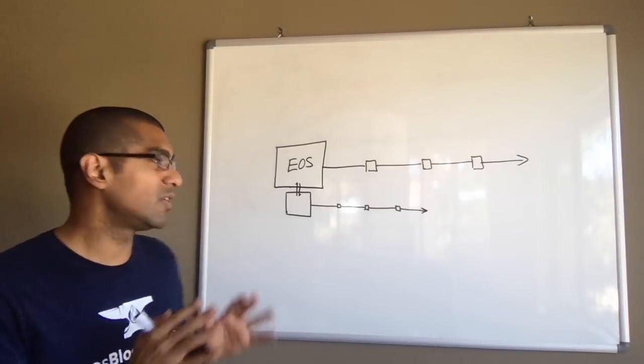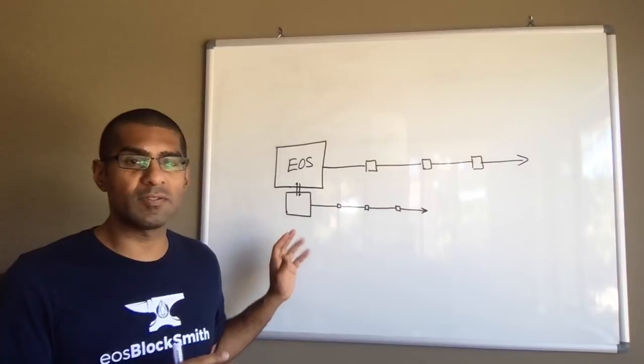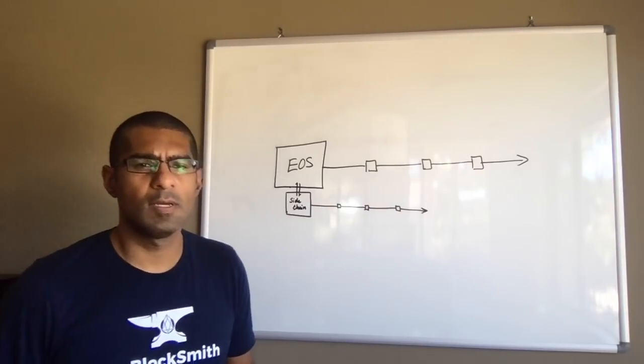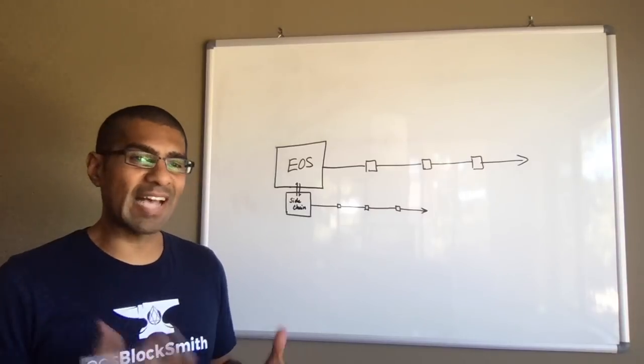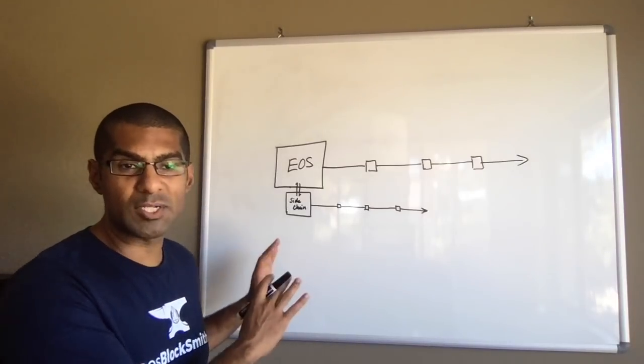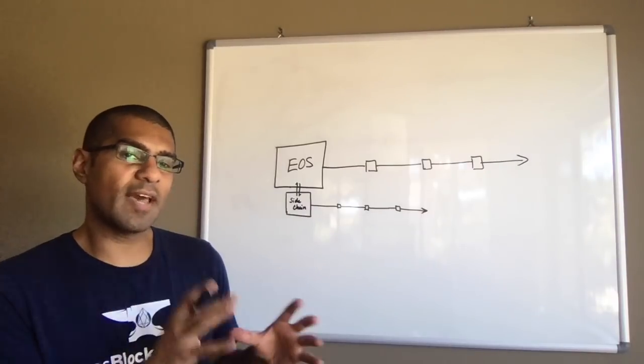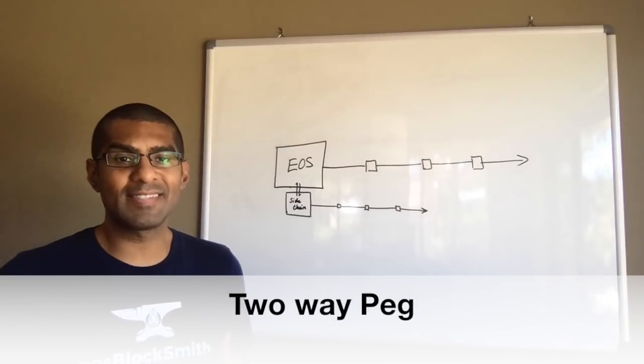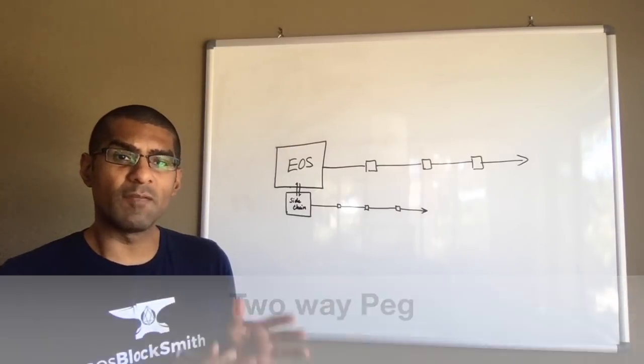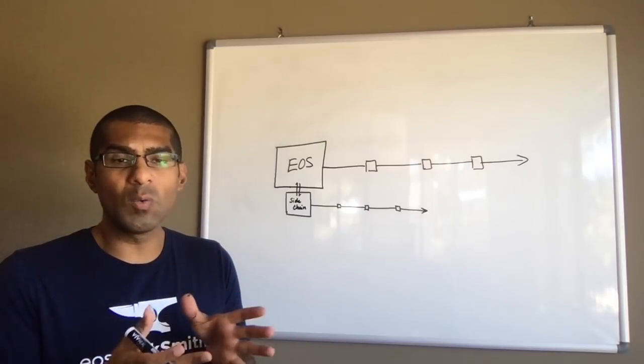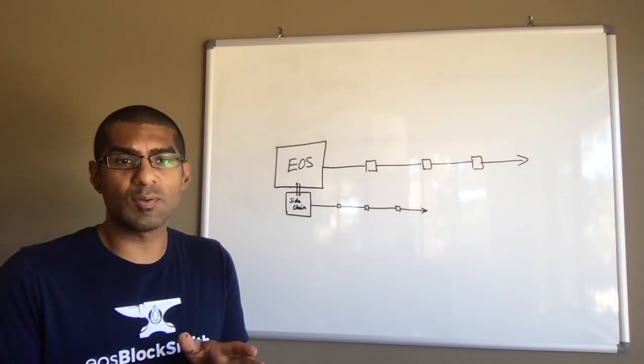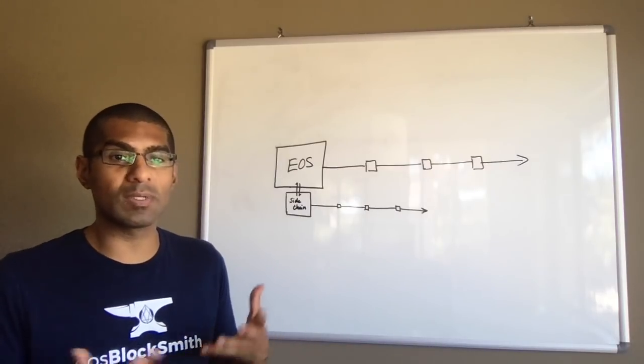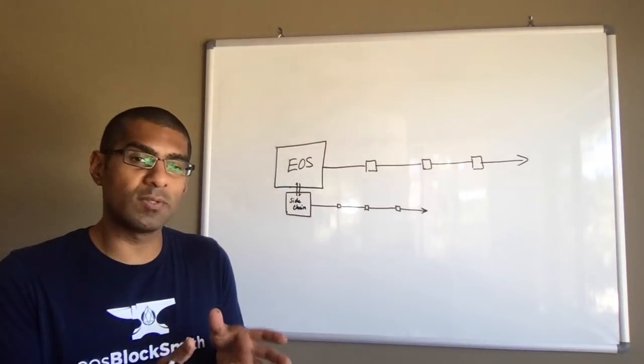Now, sidechains are essentially kind of like a buddy chain to the mainnet chain or a sidekick chain to the mainnet chain. Now, the main feature of a sidechain, even though it's its own blockchain, is that it's always linked or tethered to the main chain by something called a two-way peg. That's to say that the relationship of the price of an EOS token will always stay the same, stay fixed to the price of the sidechain token. Whether that be two to one or 10 to one, that ratio is always going to stay the same.